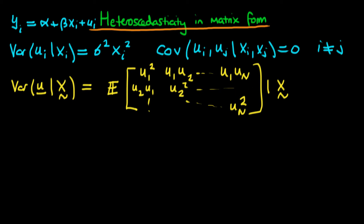Under homoscedasticity, each diagonal component was equal to sigma squared, and assuming no autocorrelation, each off-diagonal component was equal to zero. We can still assume that each of the off-diagonal components is equal to zero because we're assuming no autocorrelation. So we can still write each off-diagonal component as being equal to zero.